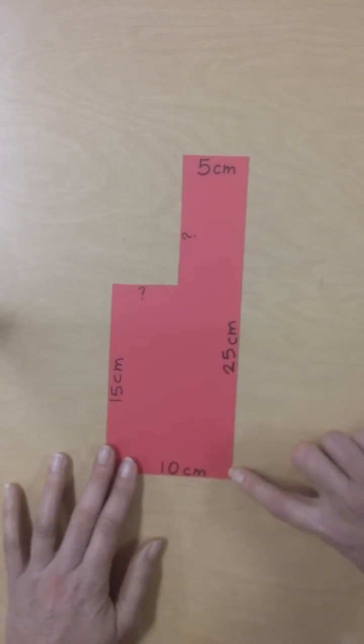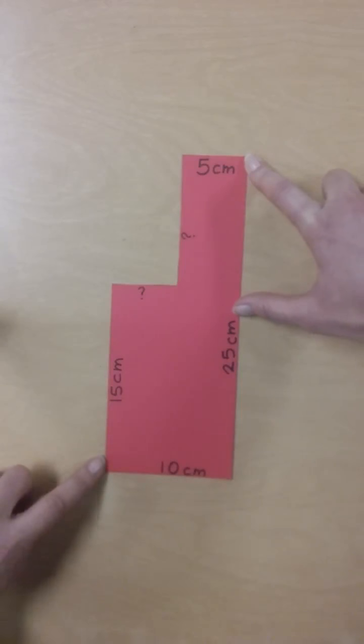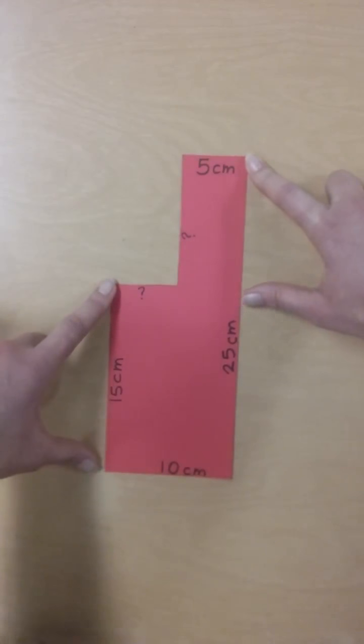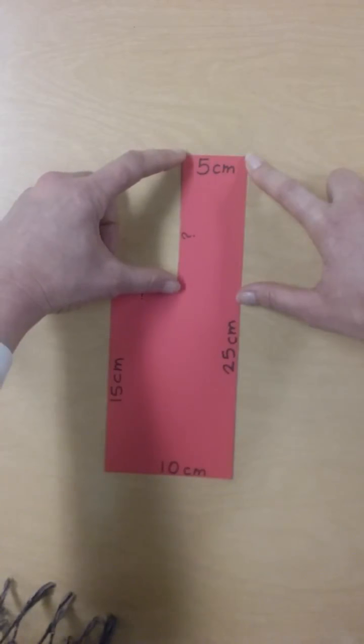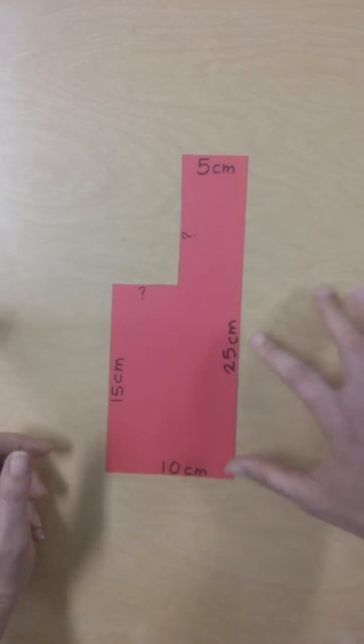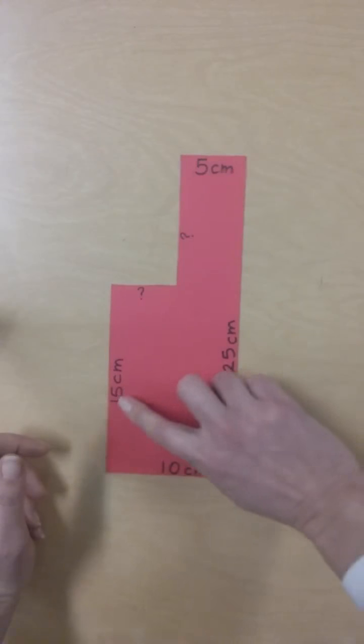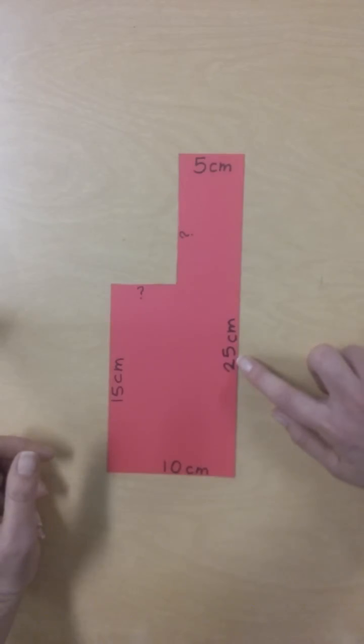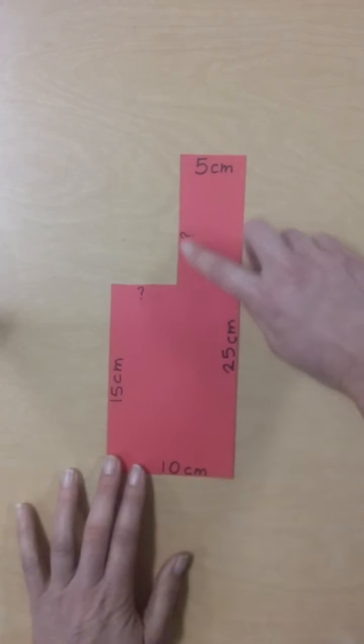And I can see that this side is 25 centimeters, and this side is 15 centimeters. So this must be what's left when I subtract 15 from 25. So 25 minus 15 is 10. So this unknown side has to be 10 centimeters.